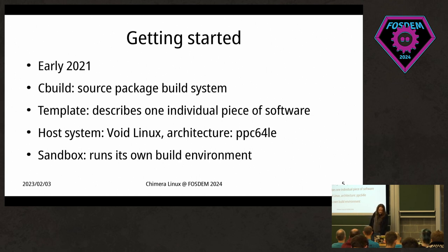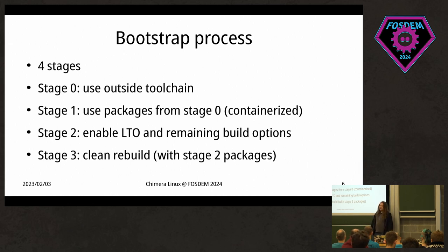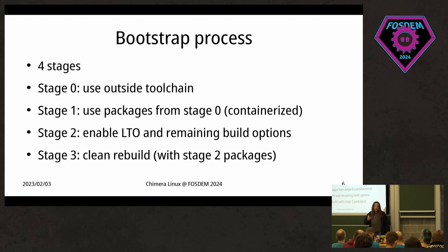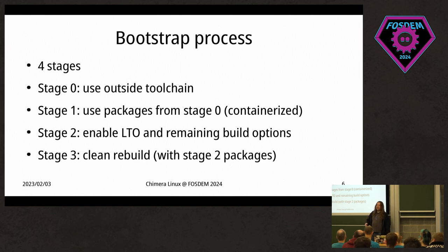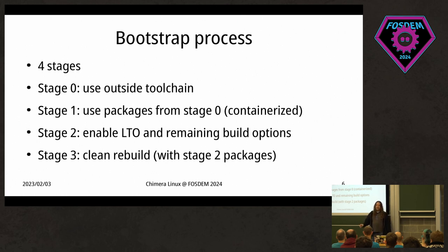What does the bootstrap process look like? There are four stages. Stage zero is to bring up the first version of the build container, which runs using the toolchain from the outside system. You use the outside toolchain to compile all the basic things needed to assemble the minimal build environment. This is done with minimal features and not many compiler flags — things like LTO are disabled at this point since we cannot make too many assumptions about what compiler is used on the outside.